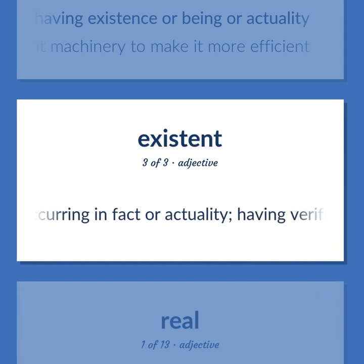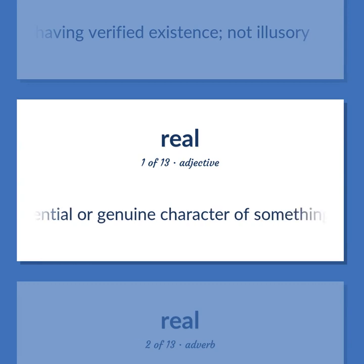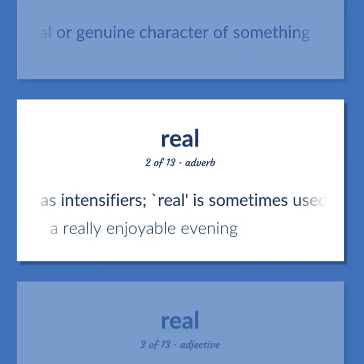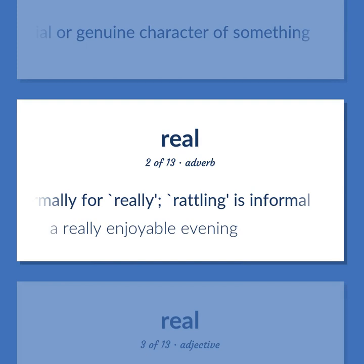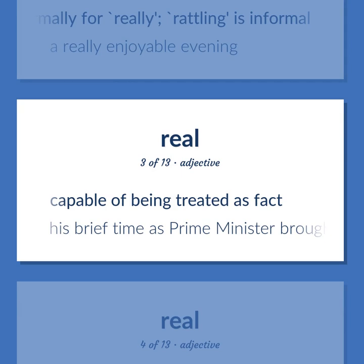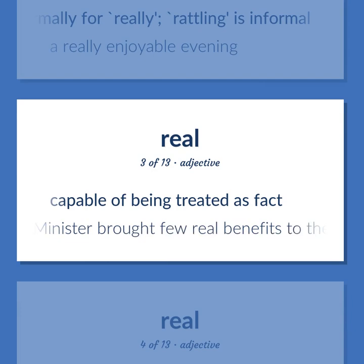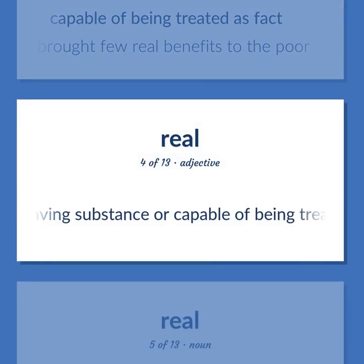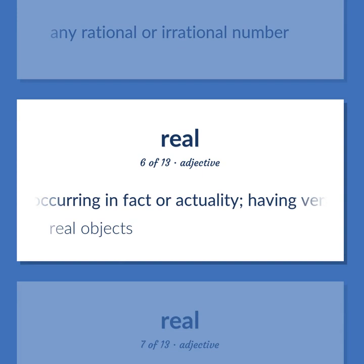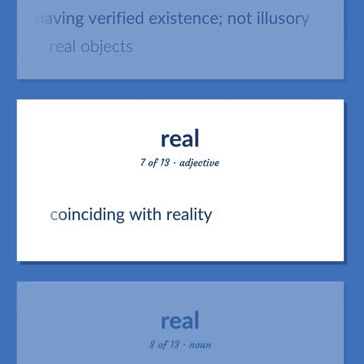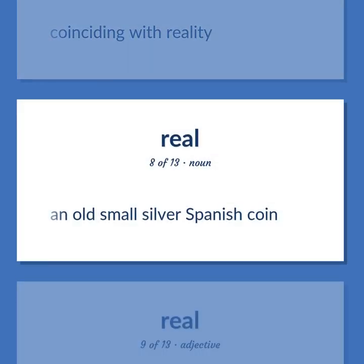Real: being or occurring in fact or actuality, having verified existence, not illusory. Being or reflecting the essential or genuine character of something. Used as intensifiers — 'real' is sometimes used informally for 'really'; 'rattling' is informal. A really enjoyable evening. Capable of being treated as fact. His brief time as prime minister brought few real benefits to the poor. Having substance or capable of being treated as fact — not imaginary. Any rational or irrational number. Being or occurring in fact or actuality, having verified existence, not illusory. Real objects.